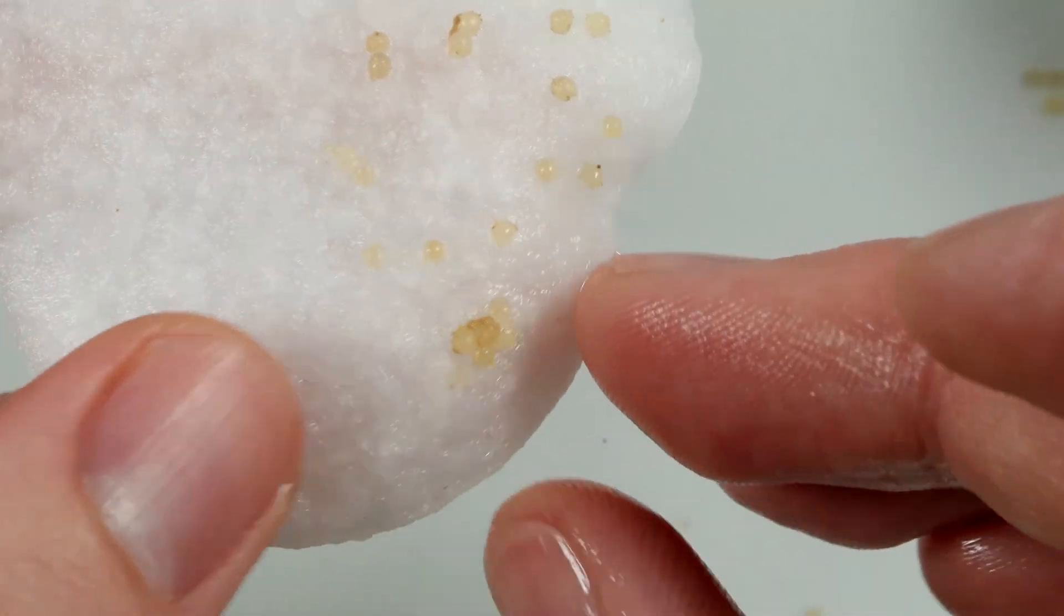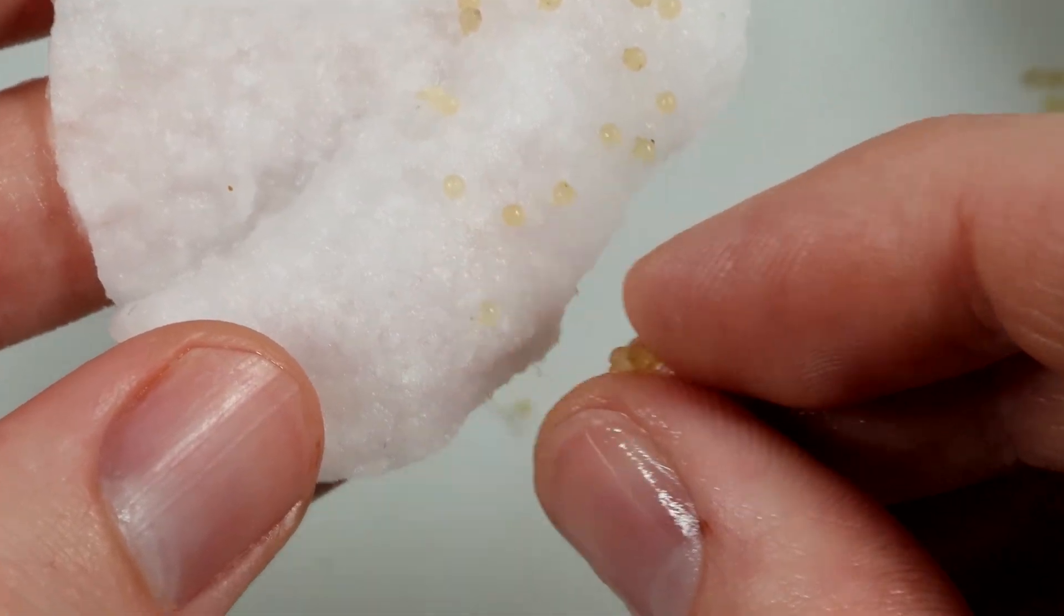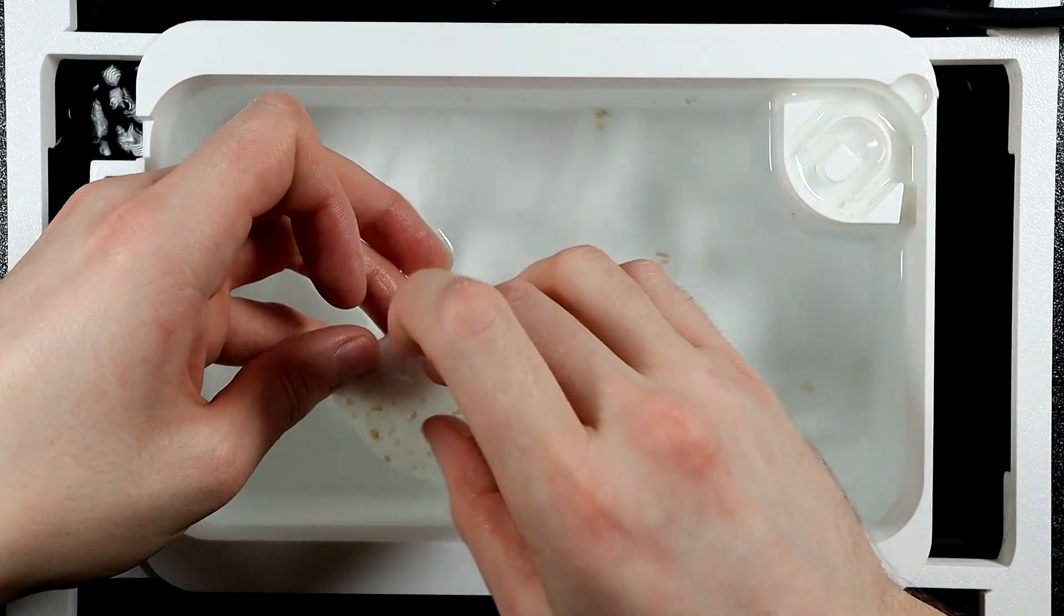As I transferred the eggs to a fry tray, I noticed something really surprising. Even two days later, the eggs were still pliable and adhesive. I was actually able to re-adhere some of them to the tray walls. And this is very unusual.